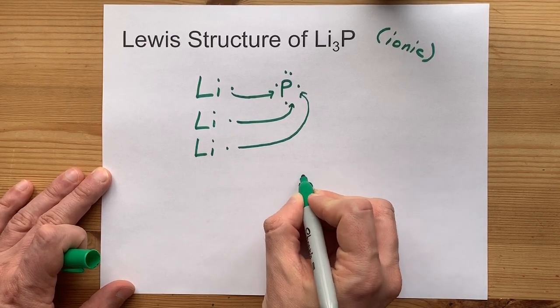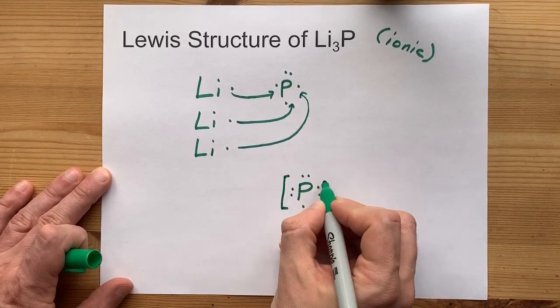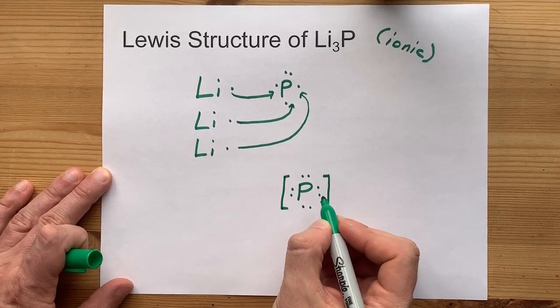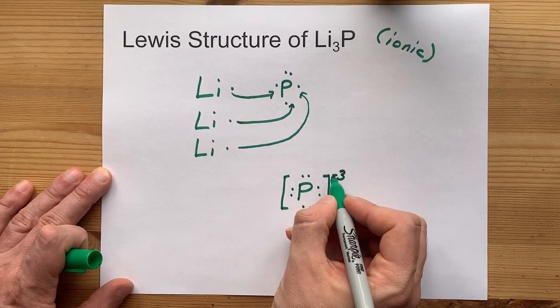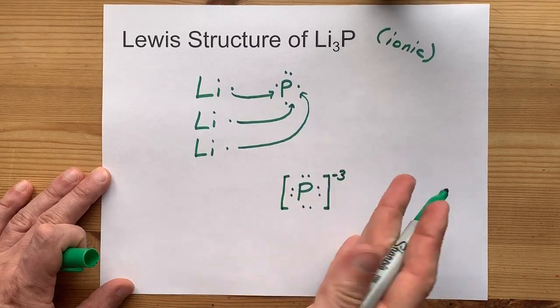So let's draw that phosphorus with its 8 electrons. Now that's 3 more than it started with. So we write a little minus 3 as a charge. The square brackets here mean it's charged at all.